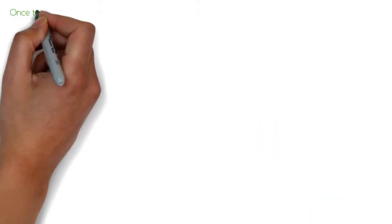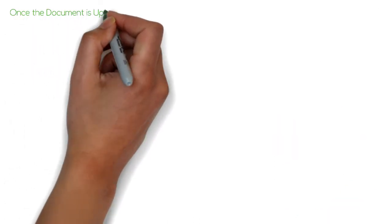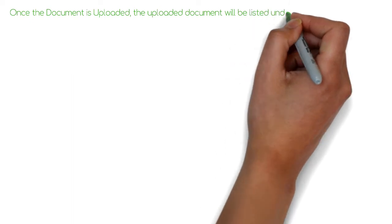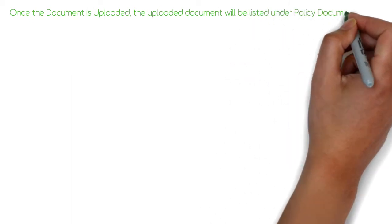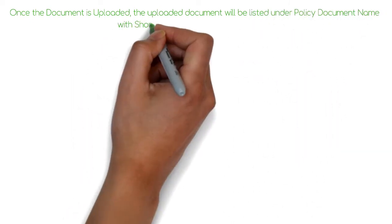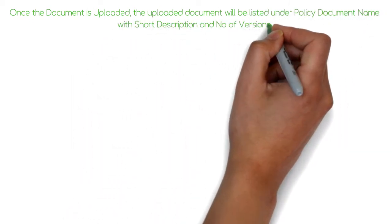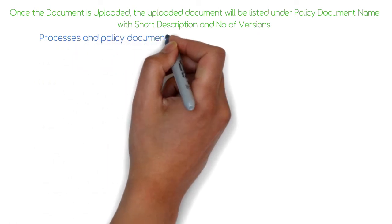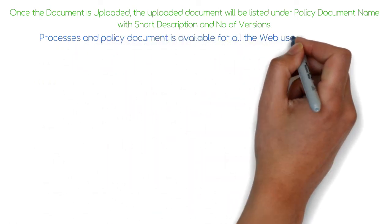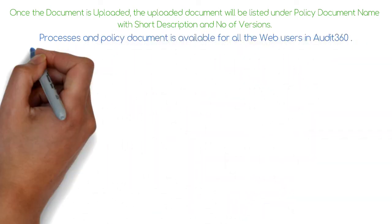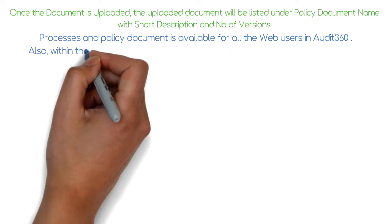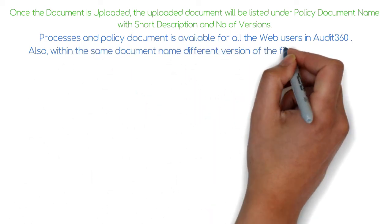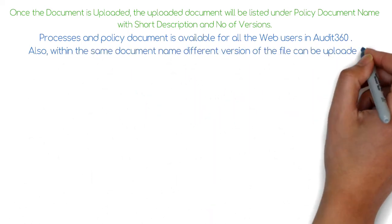Once the document is uploaded, it will be listed under Policy Document Name with a short description and number of versions. The Processes and Policy Document is available for all web users in Audit360. Also, within the same document name, different versions of the file can be uploaded.